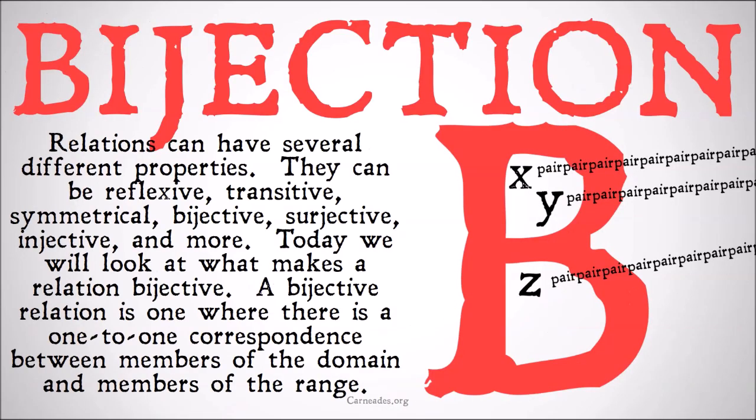Relations can have several different properties. They can be reflexive, they can be transitive, they can be symmetrical, they can be bijective, surjective, injective, and many more things. Today we're going to look at what makes a relation bijective.